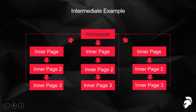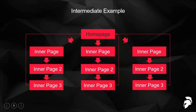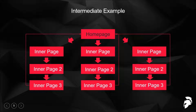This intermediate silo structure isn't too complicated. You have the home page linking to three first-tier inner pages, those inner pages link to a second tier, and that second tier links to a third tier of inner pages. The link juice depreciates a little bit each time it goes further down the silo, so the most link juice flows to the first inner pages and the least reaches the third tier.